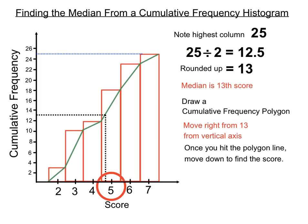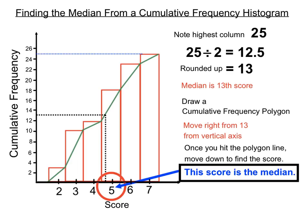And so, that score there, the five, is the 13th score of our set of data. That score is the median. That's the one we're looking for.